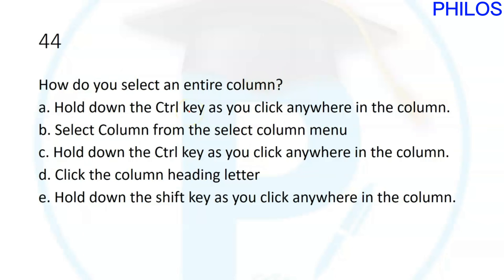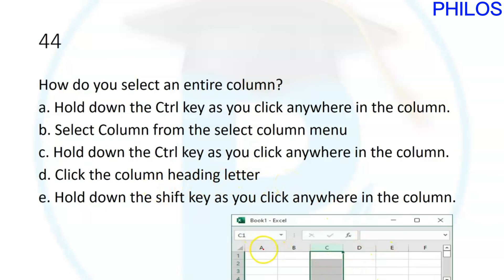Question forty-four: how do you select an entire column? To select an entire column, click the column heading letter at the top. For example, clicking the letter C selects all of column C, clicking D selects all of column D. The correct answer is D: click the column heading letter.